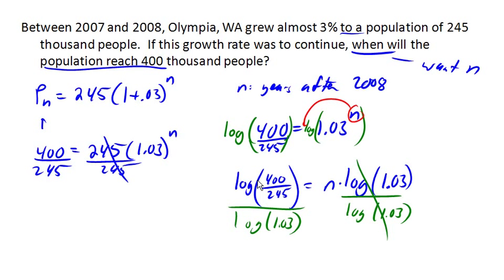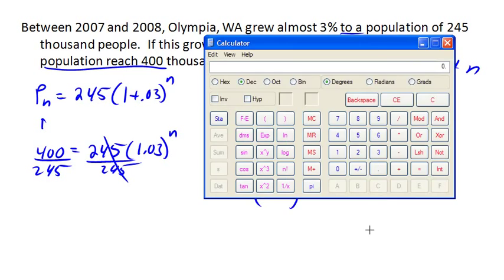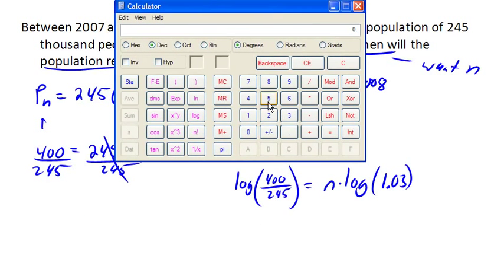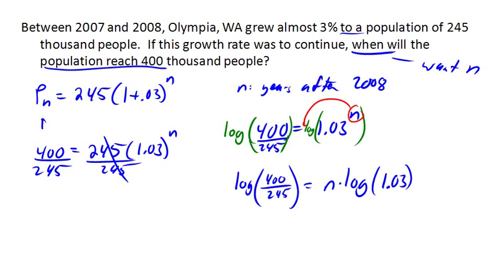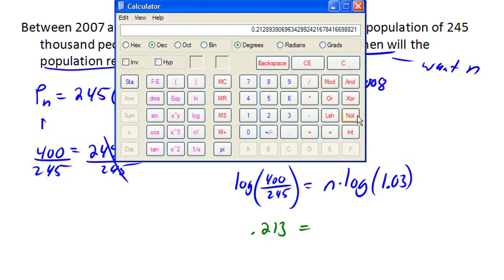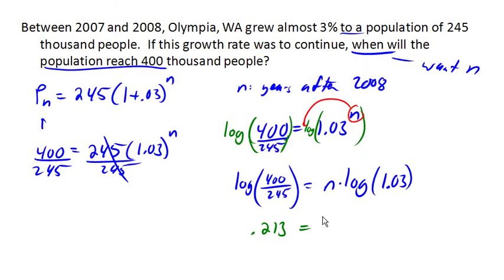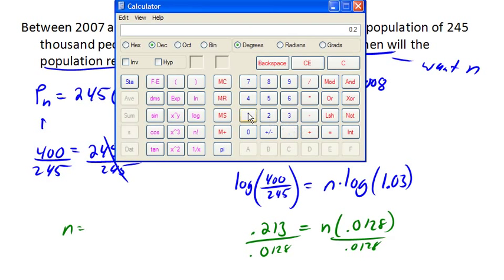So let's see if we can come up with a number here. So we're going to pull out our calculator. And the first thing I'm going to do is figure out this one over here. So I'm going to take 400 divided by 245 is 1.632, roughly. And now I'm going to take the log of that, and I get .213, roughly. So that was .213. And then over here, we're going to take 1.03, take the log of that. That's about .0128. And then we can divide by that on both sides. And we get n is, let's see here, .213 divided by .0128 is 16.64.